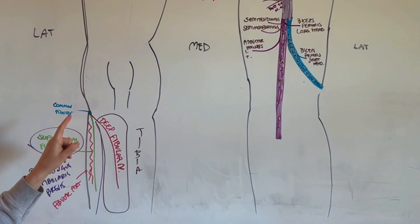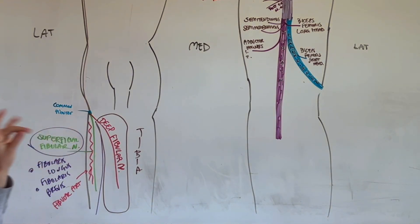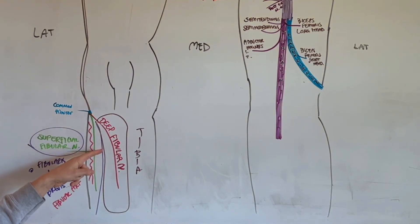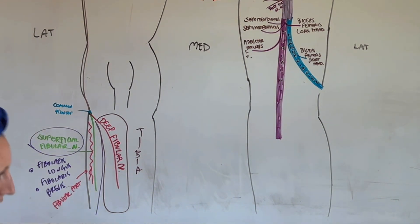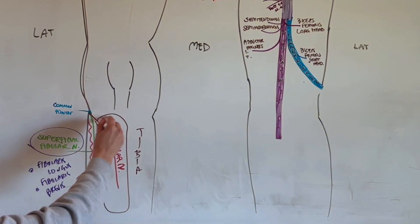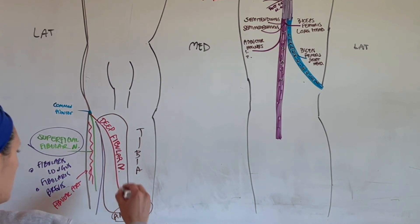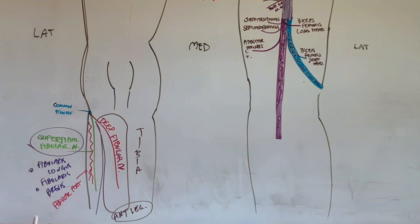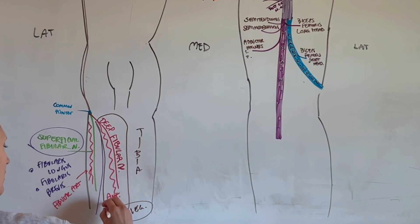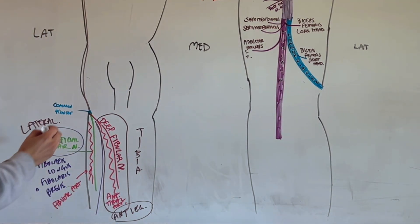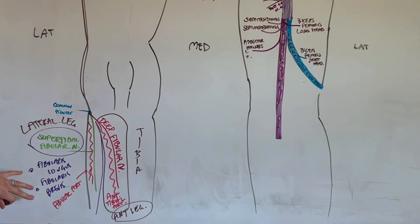Deep fibular nerve — which I accidentally called 'anterior fibular' in this video but corrected in the writing — heads into the anterior compartment of the leg. It innervates the anterior leg compartment muscles and runs with the anterior tibial artery. To recap: lateral leg has superficial fibular nerve and fibular artery to the fibular muscles; anterior leg has deep fibular nerve and anterior tibial artery.